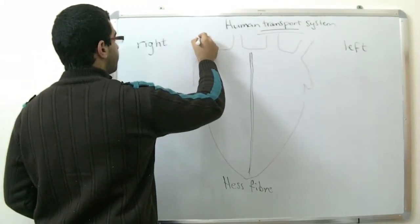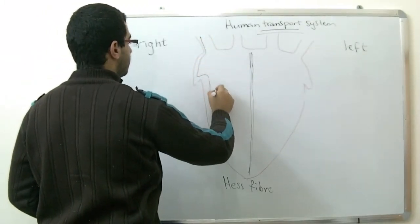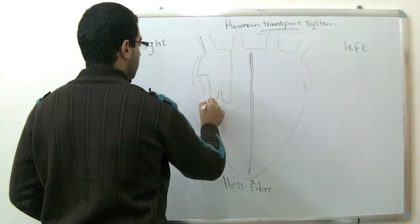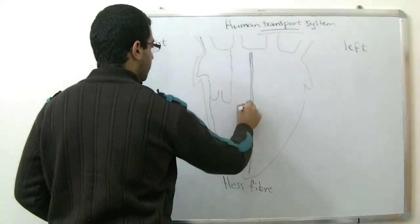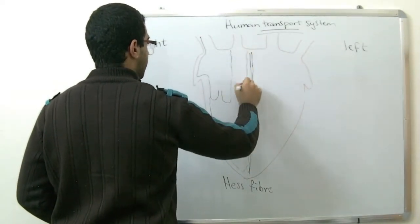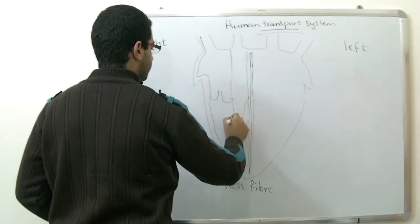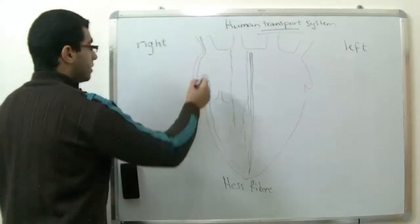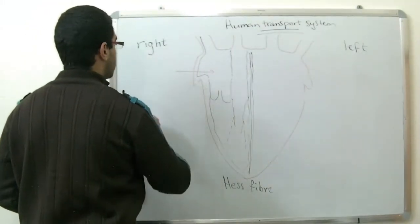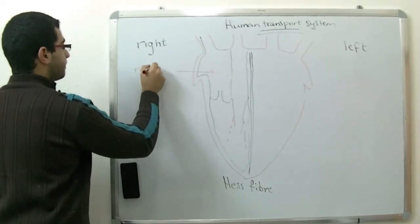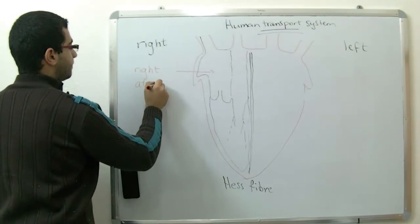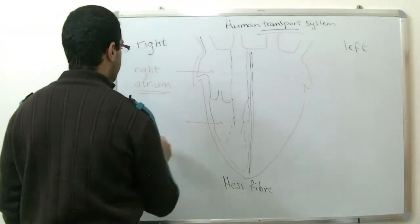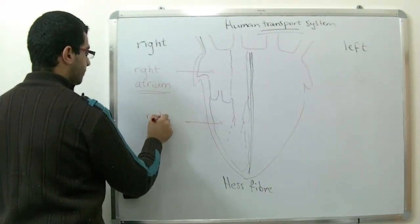Here we have the structure of the heart. This part is called the right atrium and the one down here is called the right ventricle.